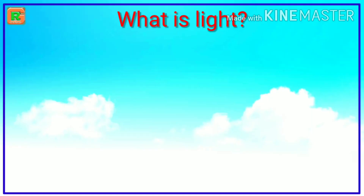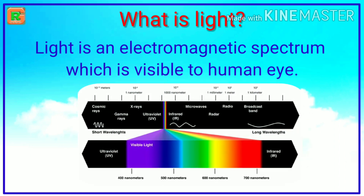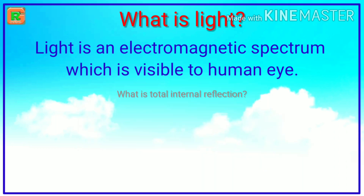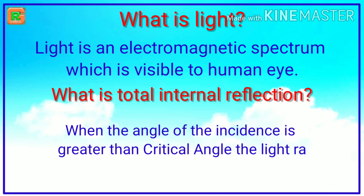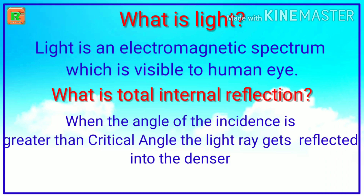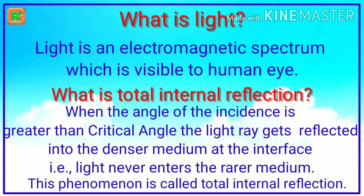What is light? Light is an electromagnetic spectrum which is visible to the human eye. Then what is total internal reflection? When the angle of incidence is greater than the critical angle, the light ray gets reflected into the denser medium at the interface. That is, light never enters the rarer medium. This phenomenon is called total internal reflection.